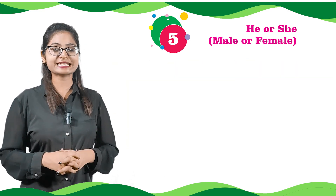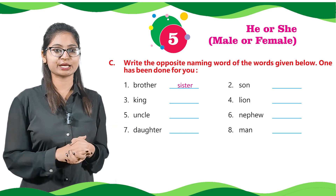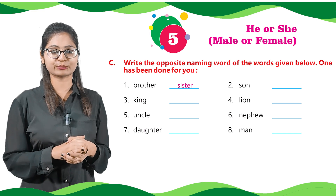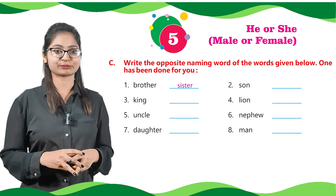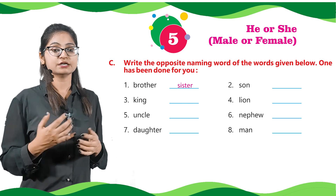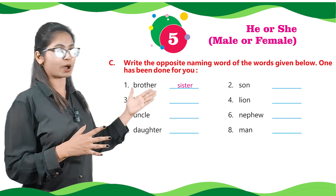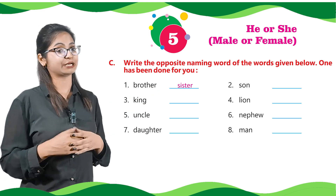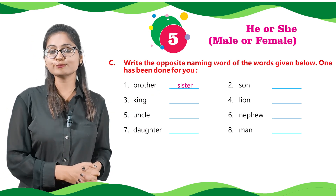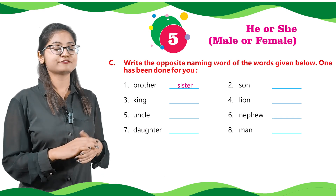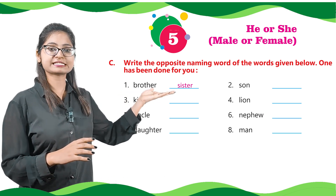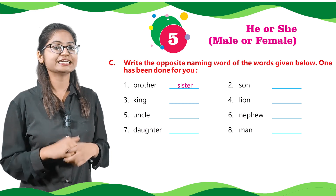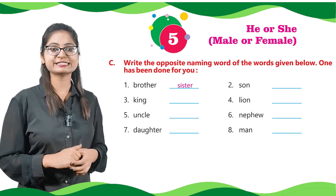Let's read Part C: write the opposite naming word of the word given below. One has been done for you. Number one: for brother, there is written sister. For number two, there is given son — and what is the opposite word for son? Yes, you are right, it's daughter.